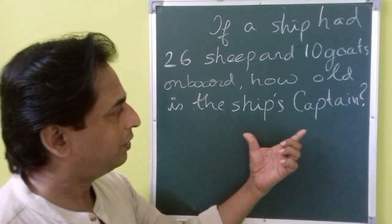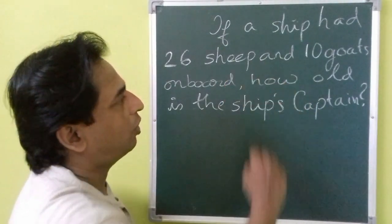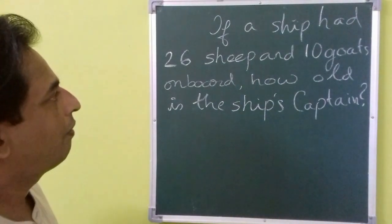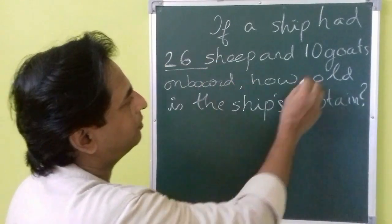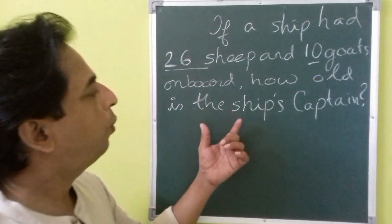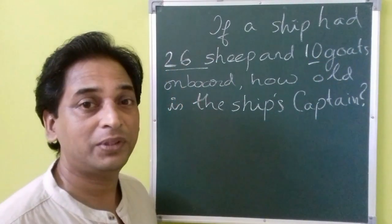We are just analyzing whether this question is solvable or not. The question is: if a ship had 26 sheep and 10 goats onboard, how old is the ship's captain?